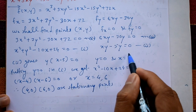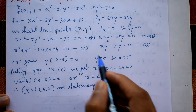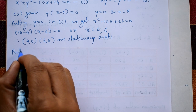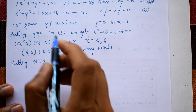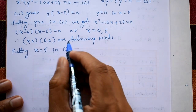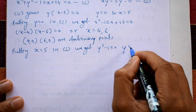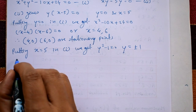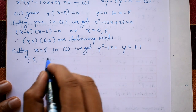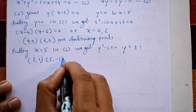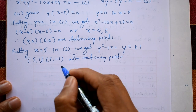Next, take x = 5 from equation 2 and substitute into equation 1. We get 25 + y² - 50 + 24 = 0, which simplifies to y² - 1 = 0, giving y = ±1. So additional stationary points are (5, 1) and (5, -1).